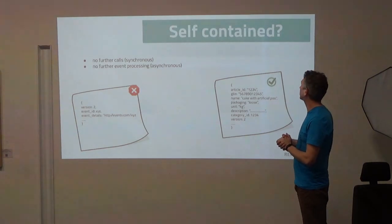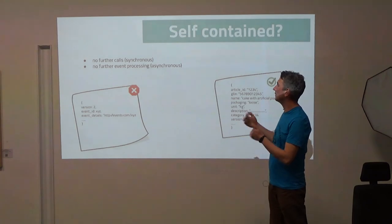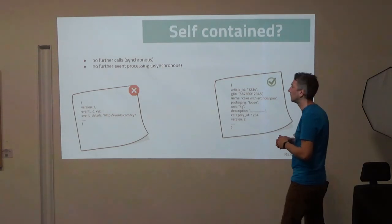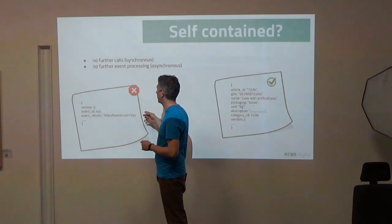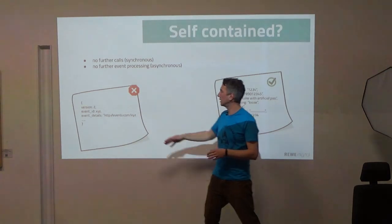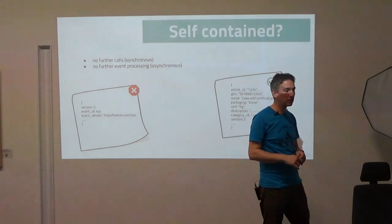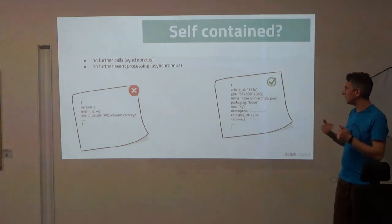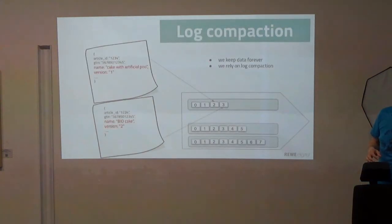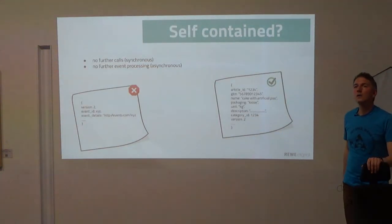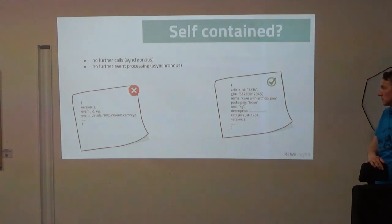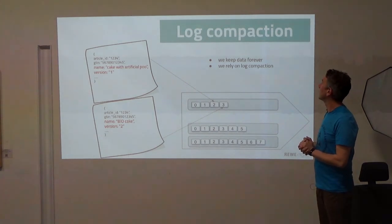Self-contained events mean that when I read some data I don't need to make any further calls, either synchronous or asynchronous. On one side you see an event that is not self-contained because it has a property saying 'the remaining details are at this URL — please make a request.' On the other hand, a self-contained event contains all the information so when you read it no more requests are needed. Regarding maximum message size — by default it's about one megabyte, and we have never hit that limit with our JSON entities.